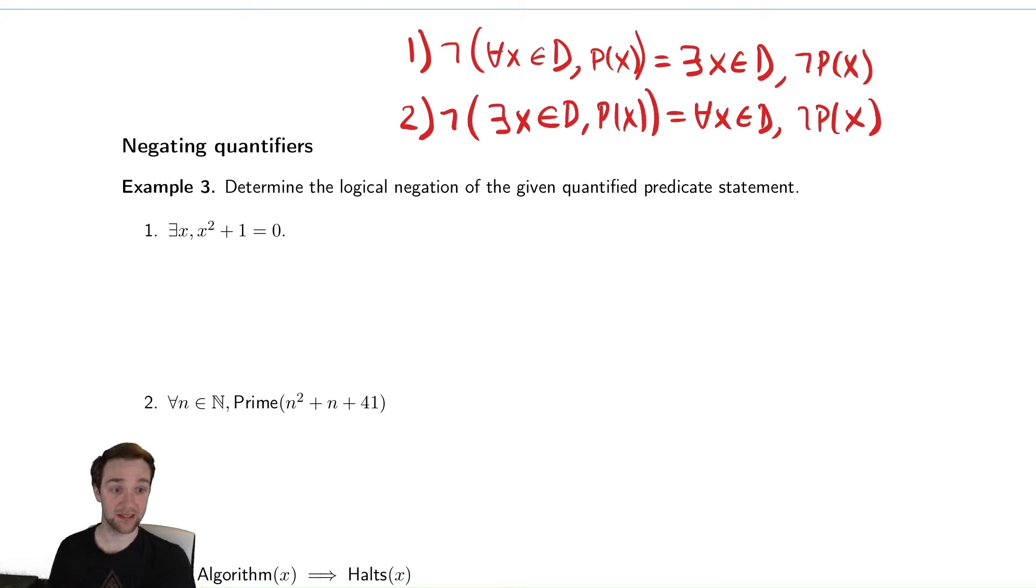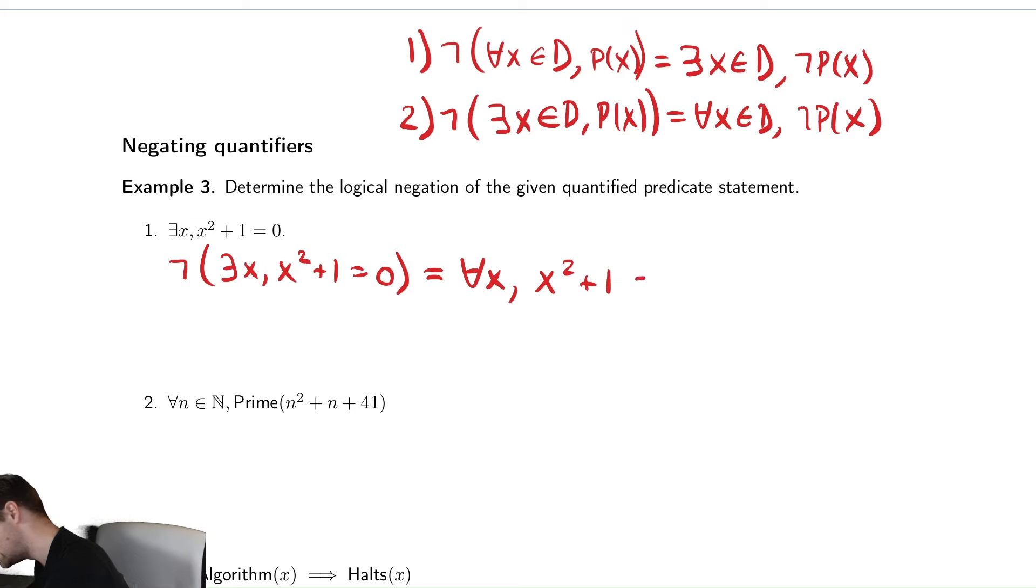So to negate the statements here, we're going to start with the top one. We have not there exists an x such that x squared plus 1 equals 0. We switch the there exists to a for all x, and then x squared plus 1 equals 0. The opposite of that is x squared plus 1 doesn't equal 0. So the opposite of saying there is an x that solves that equation is saying that for every single x, it does not solve that equation.